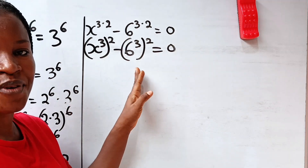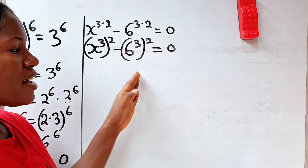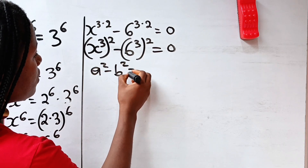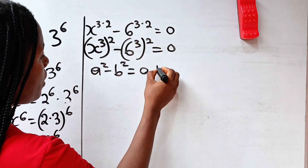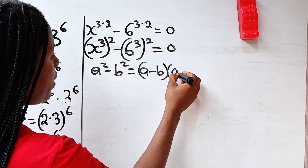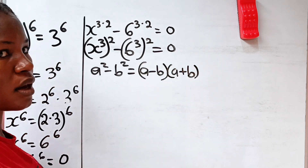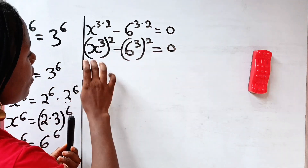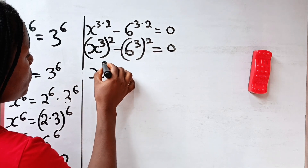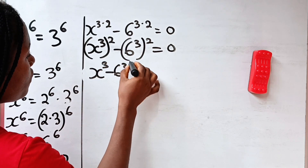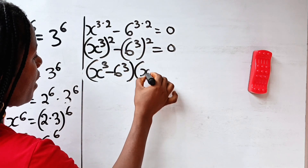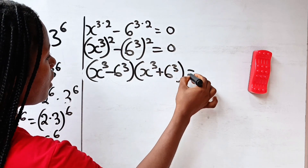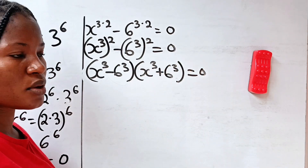Now we are seeing difference of two squares. Difference of two squares says that a squared minus b squared is equal to a minus b multiplied by a plus b. That means we can write this as x to the power of 3 minus 6 to the power of 3, multiplied by x to the power of 3 plus 6 to the power of 3, is equal to 0.